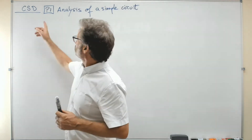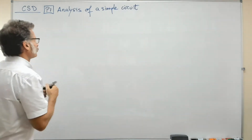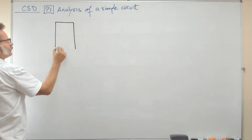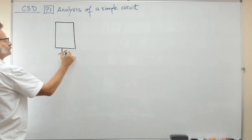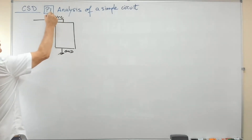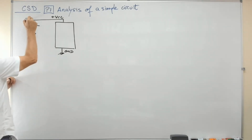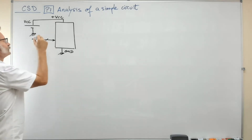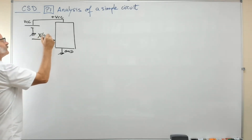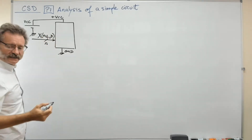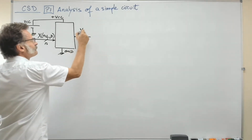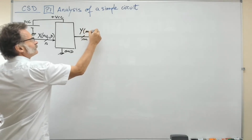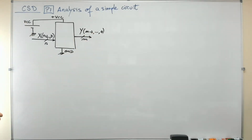Project P1 is going to be about an analysis of a single circuit. When we talk about the circuit at this level, we have to imagine a box that is powered — connected to ground and to the VCC power supply. Then you have a set of inputs, for example n different inputs named x(n-1) down to 0, and generally you will also have m outputs named m-1 down to 0. That's the typical circuit we will be analyzing and designing this semester in chapter one.